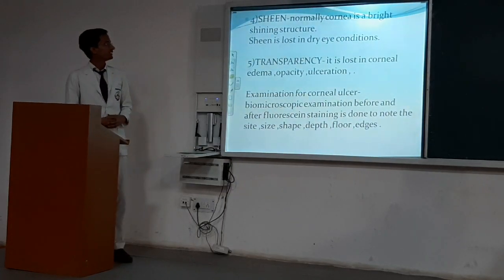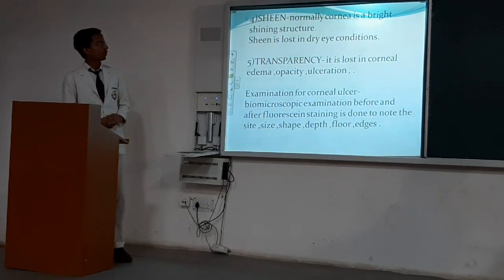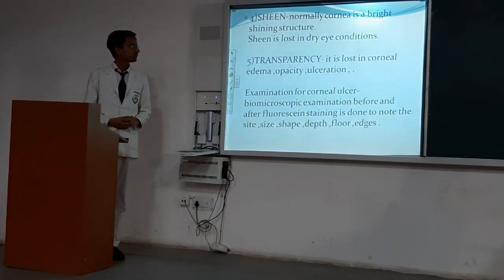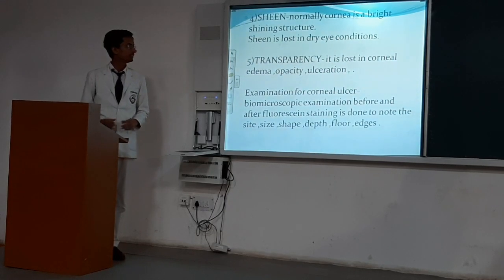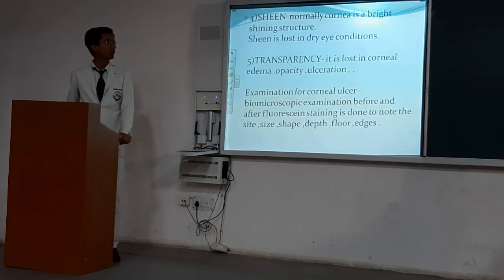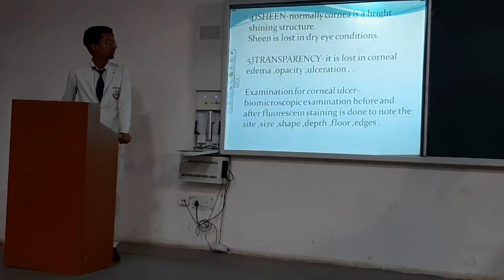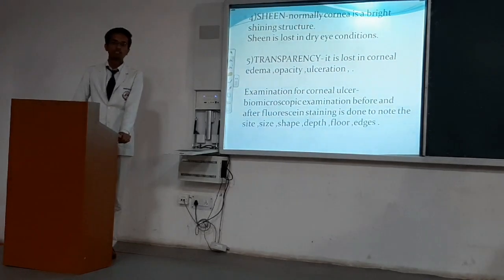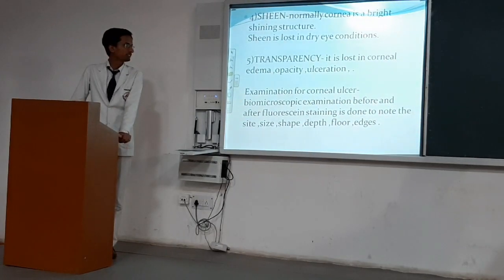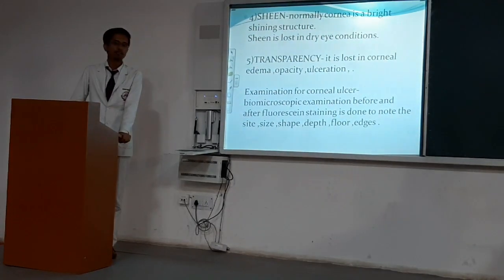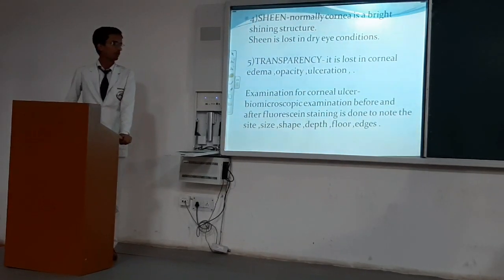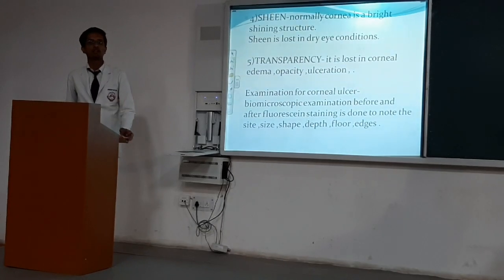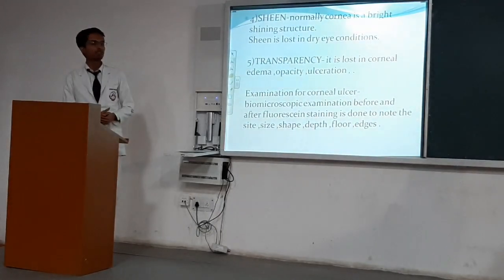Next is sheen. Normally, the cornea is a bright, shining structure. Sheen of the cornea is lost in dry eye condition. Transparency — the cornea is a transparent structure, but transparency is lost in corneal edema, corneal opacity, and corneal ulcer.